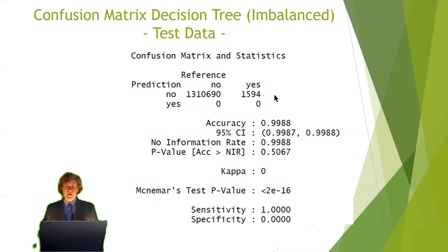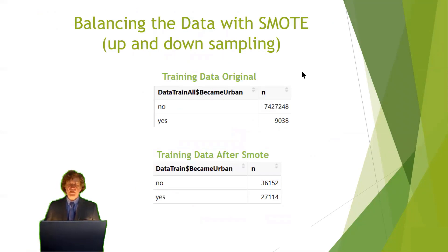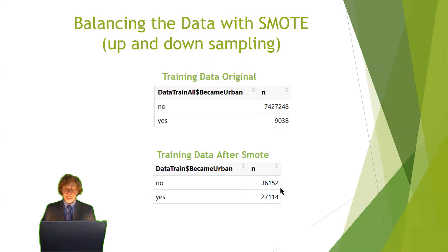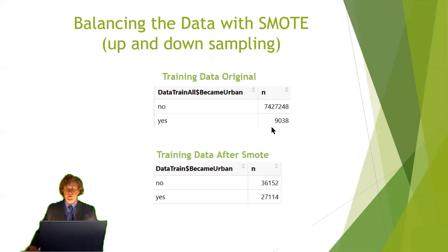We have to balance our data set. There is a procedure in R called SMOTE. What it does is delete random records from the original majority class, reducing it, and then generates new records from the minority class that are similar but not identical to existing records. For this, SMOTE uses another machine learning algorithm called k-nearest neighbors. We decided to triple our minority class, giving us a more balanced new data set.